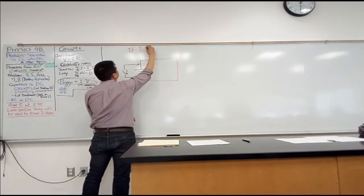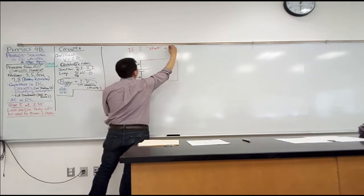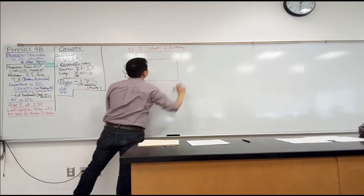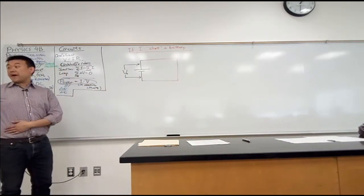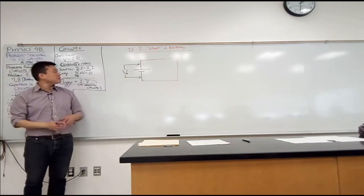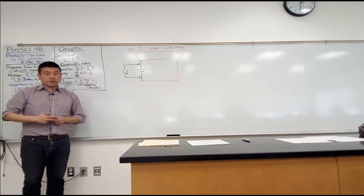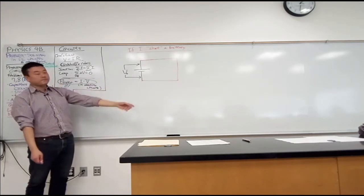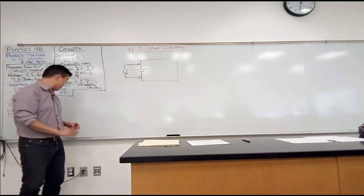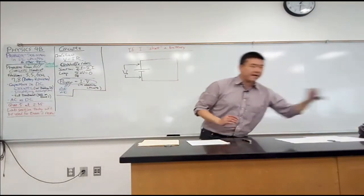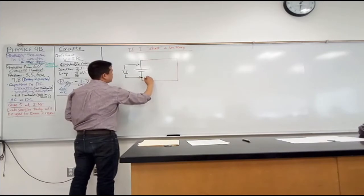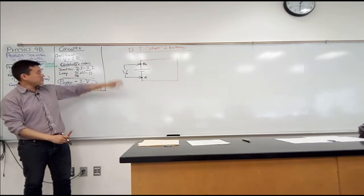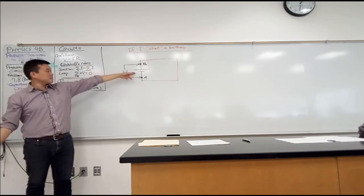So if I short a battery, the question is what happens? When you look at this circuit, it's a kind of self-contradictory circuit. The defining property of a battery is that it provides a voltage difference. If you look at points A and B, one thing you can say about these two points is that their voltage is different by a specific amount, and that's because this is a battery.